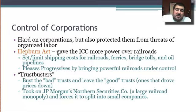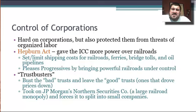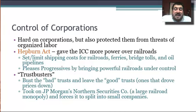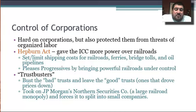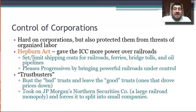Roosevelt and his administration come to be known as trust busters, but they didn't bust all of the trusts — only the bad ones that kept prices high, leaving alone the good ones that drove prices down. One of the most famous cases was taking on J.P. Morgan's Northern Securities Company, which was going to become a railroad monopoly, and forcing it to split into smaller companies.